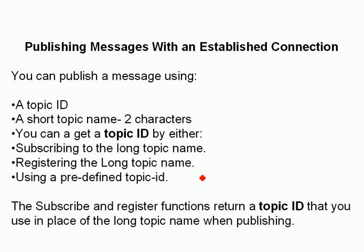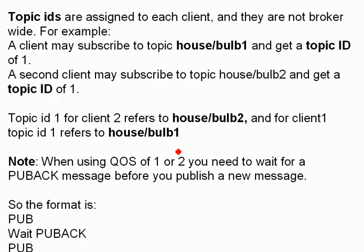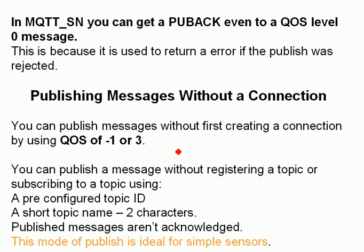Or you can use the predefined topic ID, which needs to be predefined on the broker or gateway. In MQTT-SN, you can actually get a publish acknowledgement even for a quality of service level zero message.